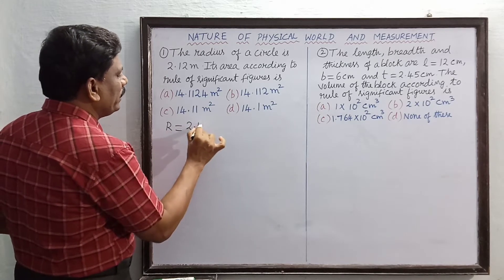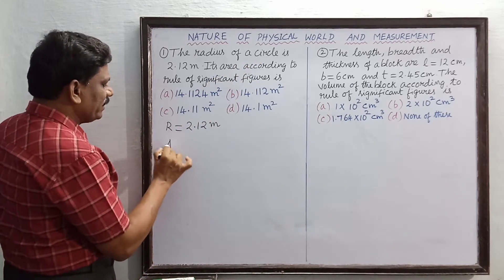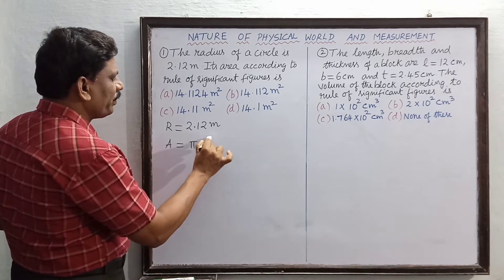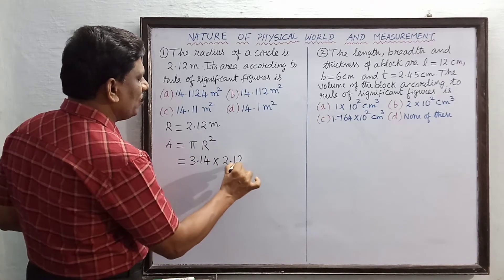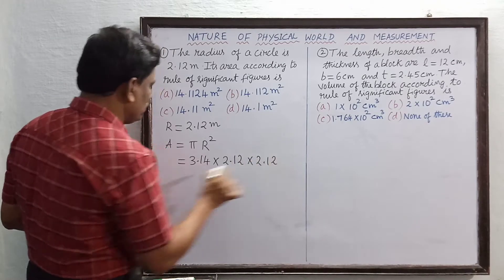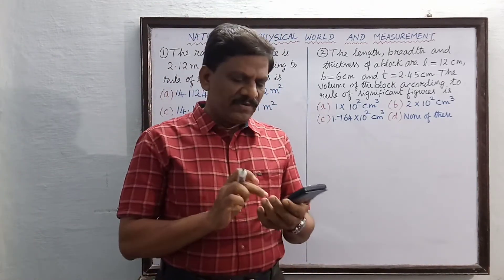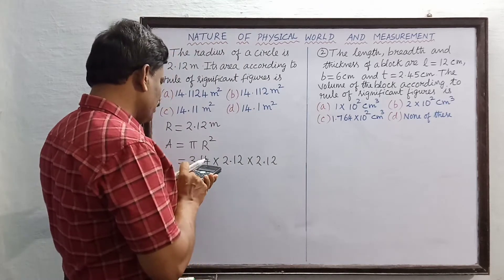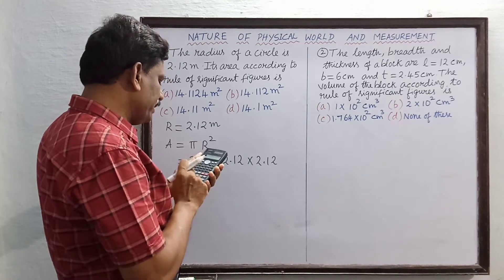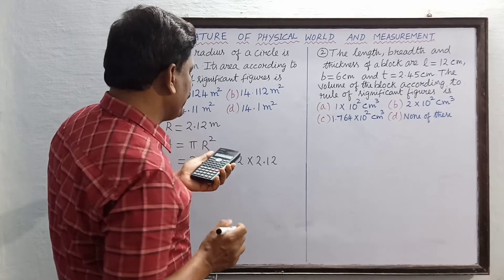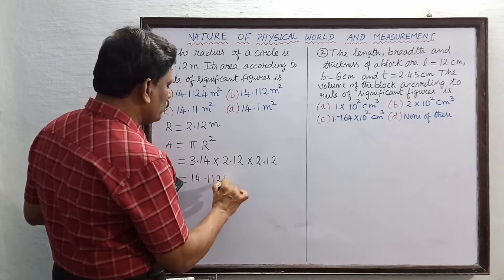The radius r is equal to 2.12 meters. The area of a circle is given by π r². So pi value 3.14 multiplied by r² which is 2.12 × 2.12. Multiplying these three numbers gives us 14.112416.